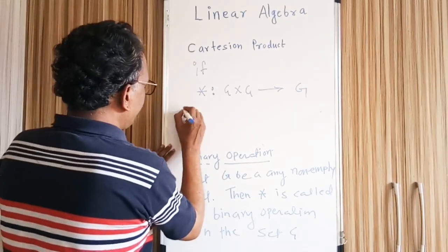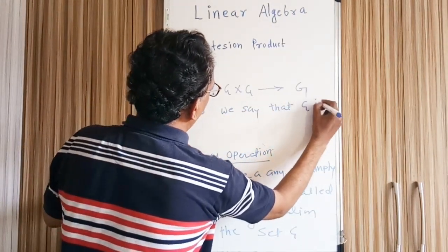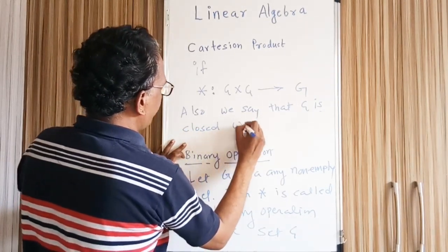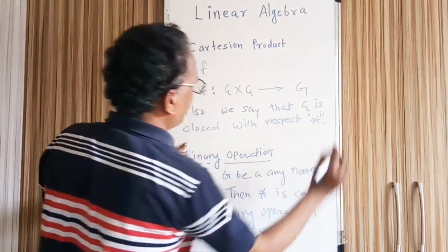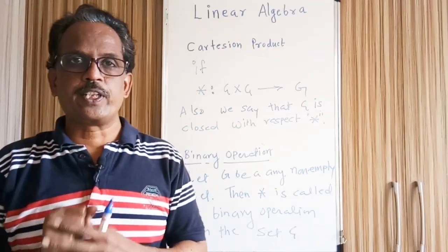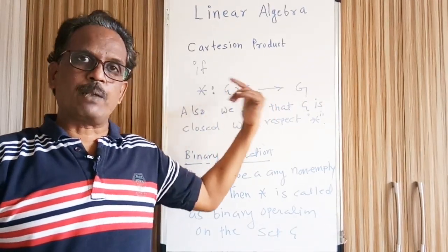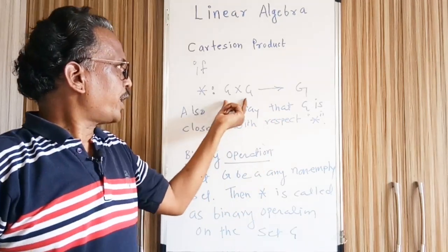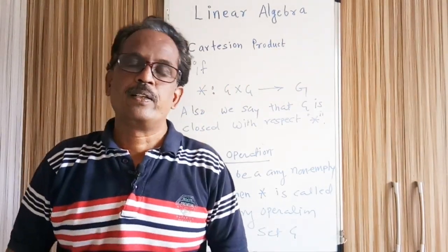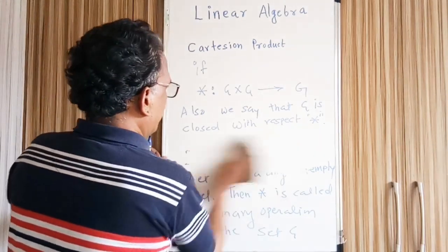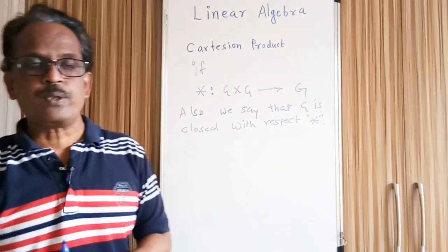We can also say that G is closed with respect to star. So what I'm saying is: take the set G, pick up one element from set G and again pick up another element from the same set. So here you are having a pair. On that pair you are performing this operation, and the result of the operation is falling in the same set. Then we can say that G is closed with respect to star, or star is called a binary operation.